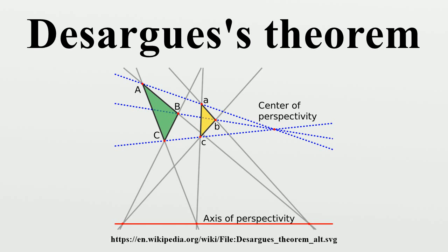Desargues's theorem is true for the real projective plane, for any projective space defined arithmetically from a field or division ring, for any projective space of dimension unequal to two, and for any projective space in which Pappus's theorem holds. However, there are some non-Desarguesian planes in which Desargues's theorem is false.